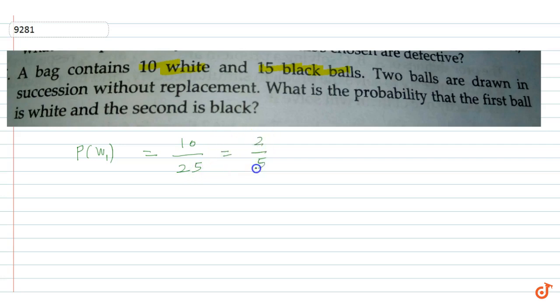Okay, no replacement. Now the probability of the second ball being black - the total black balls remain, so we need to calculate this probability now.